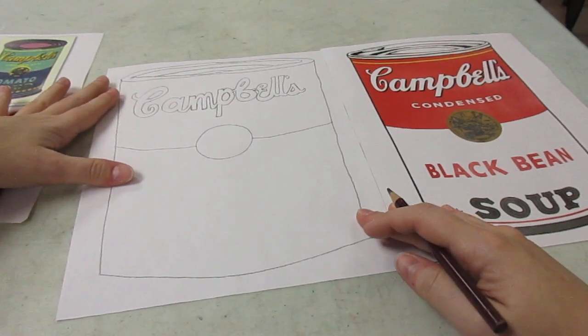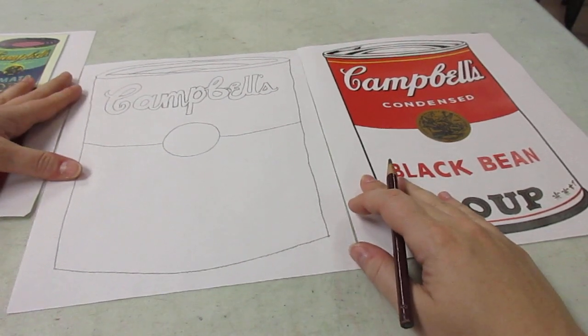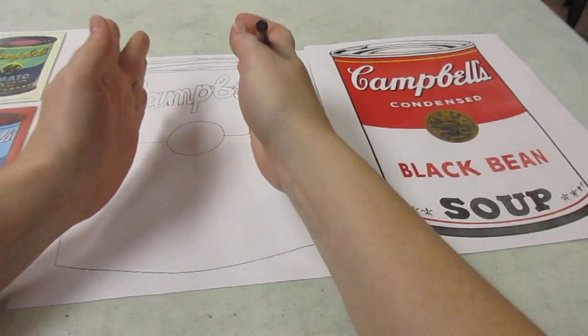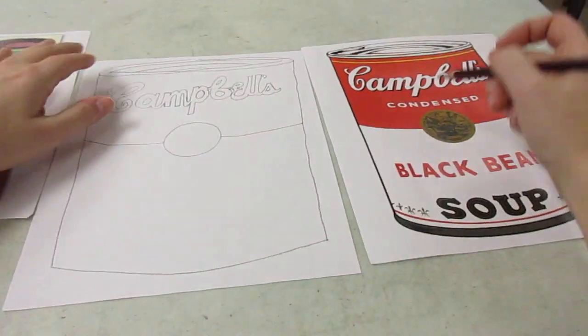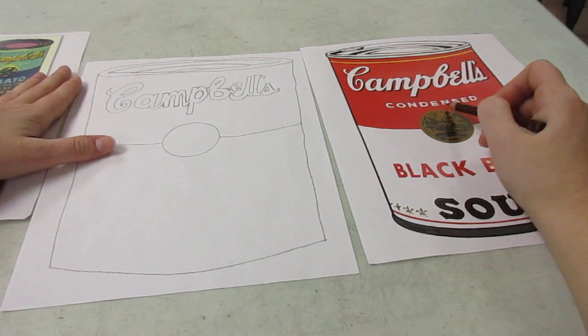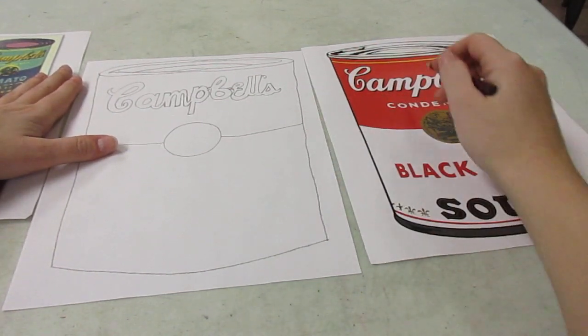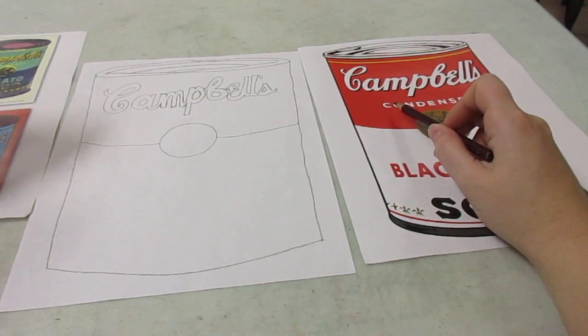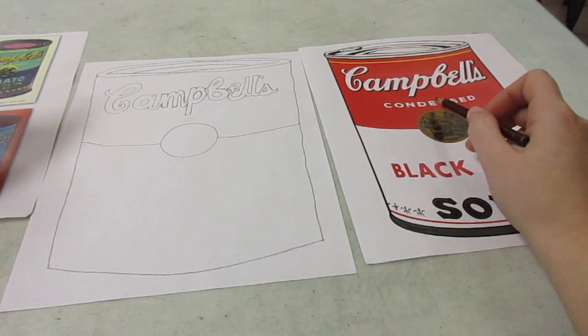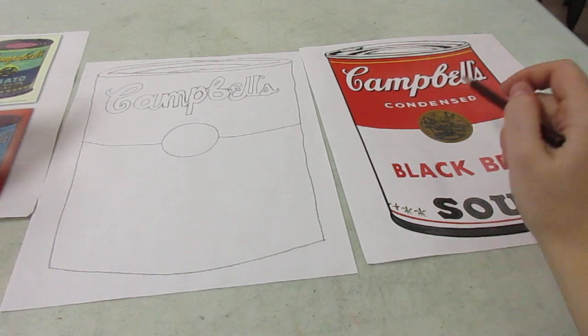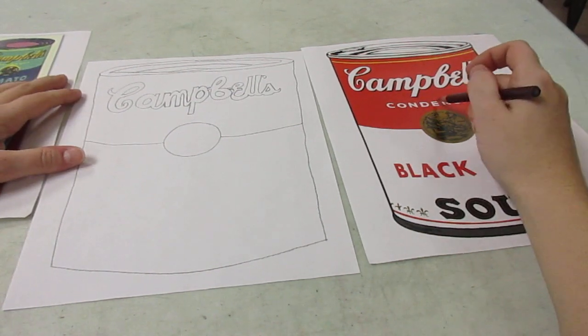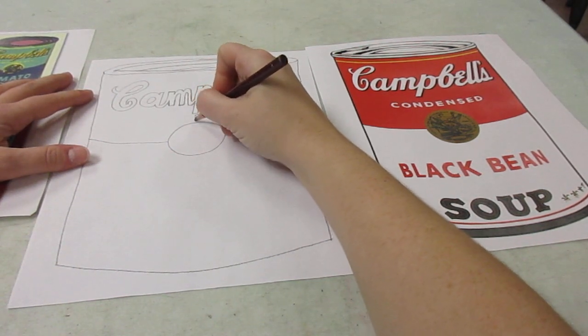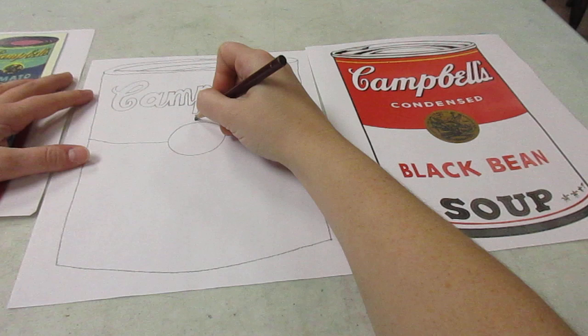So then you're going to write the rest of the words. Right here you're going to write condensed. Try to make it so it fits in the middle. So you see the letters D, E, N end up right above the circle. It's probably a good idea to figure out which letter is in the middle. And then write that one first. So E goes right here. So write your E. And they're kind of blocky letters.